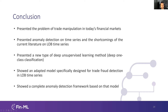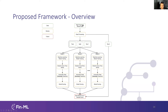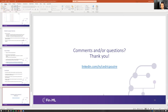In conclusion, we've presented the problem of trade manipulation in today's market, an anomaly detection approach for time series addressing shortcomings of previous literature, and a new deep unsupervised learning framework applicable to limit order book time series data. We've also shown how to adapt the model to time series and how to effectively detect peaks in the scores. This is a complete anomaly detection framework from end to end — starting with high-frequency data and outputting final anomaly scores.